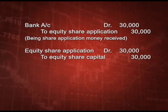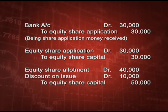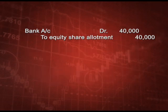Next entry: equity share allotment debit rupees 40,000 (rupees 4 per share), discount on issue debit rupees 10,000 (rupees 1 per share), to equity share capital rupees 50,000. When we receive this money: bank account debit rupees 40,000 to equity share allotment rupees 40,000.